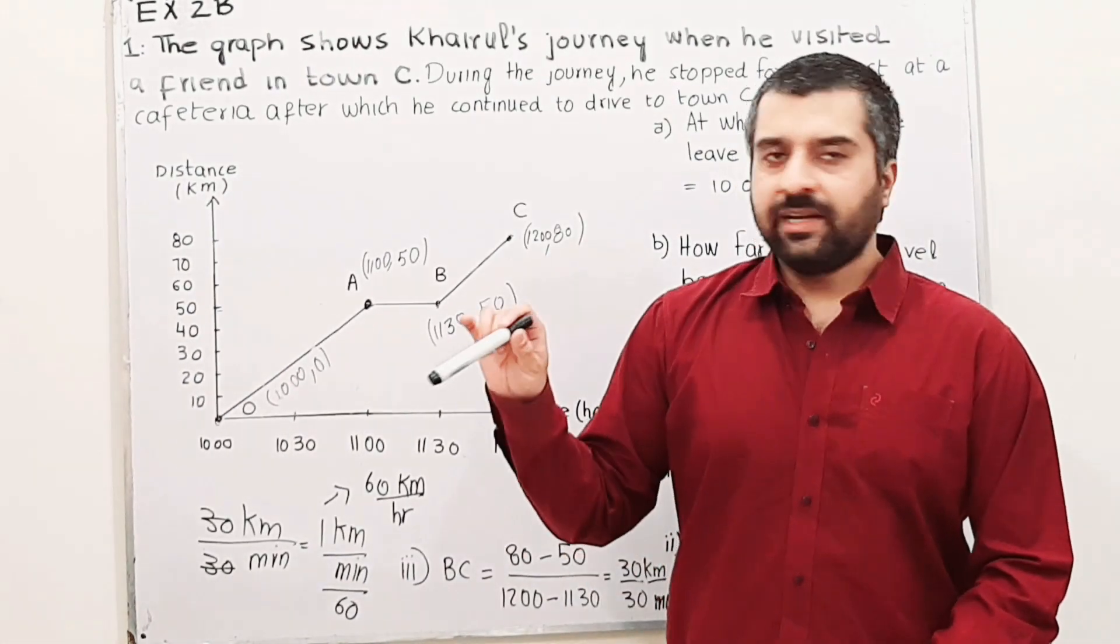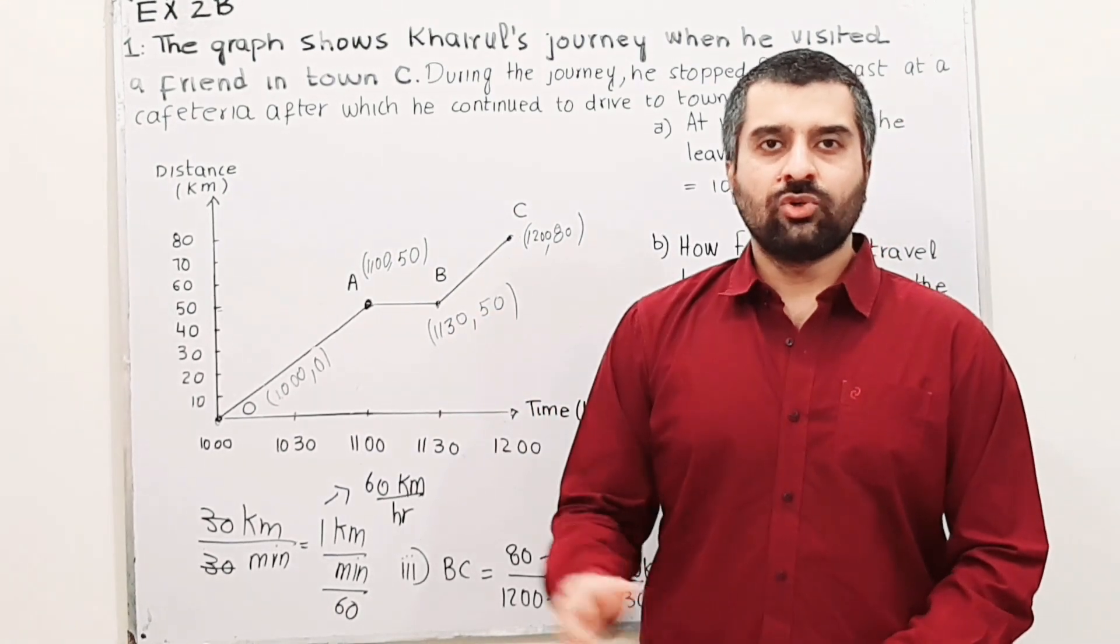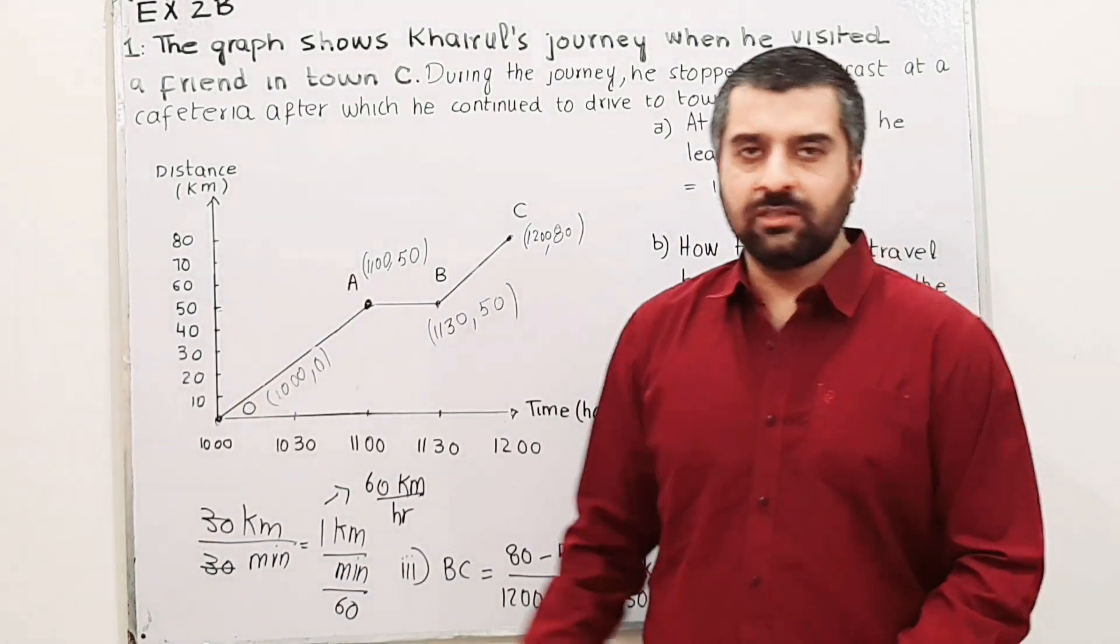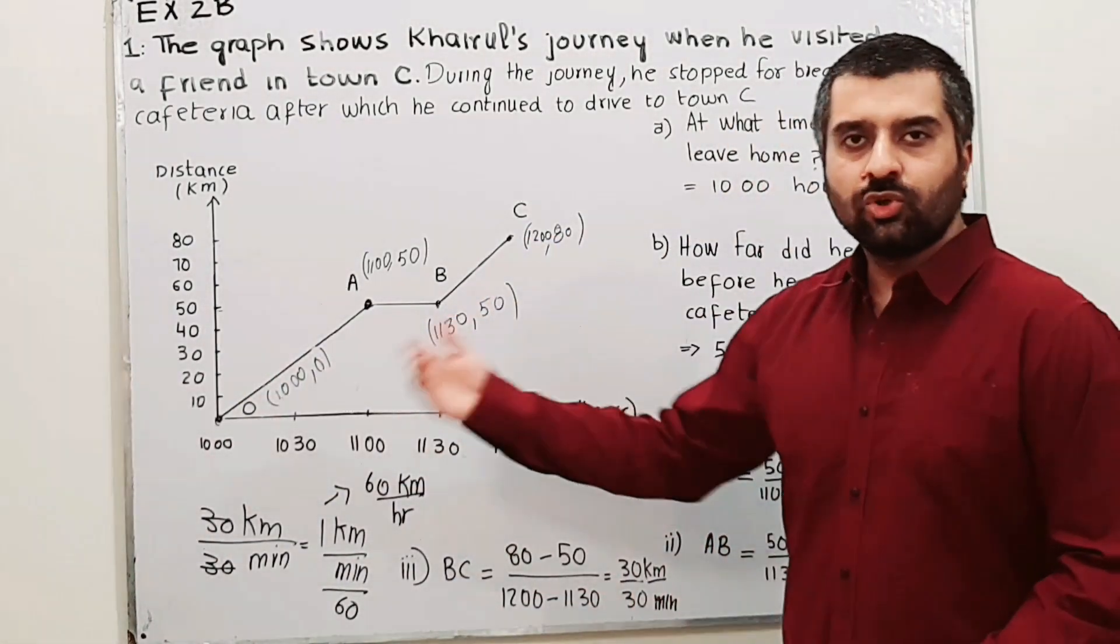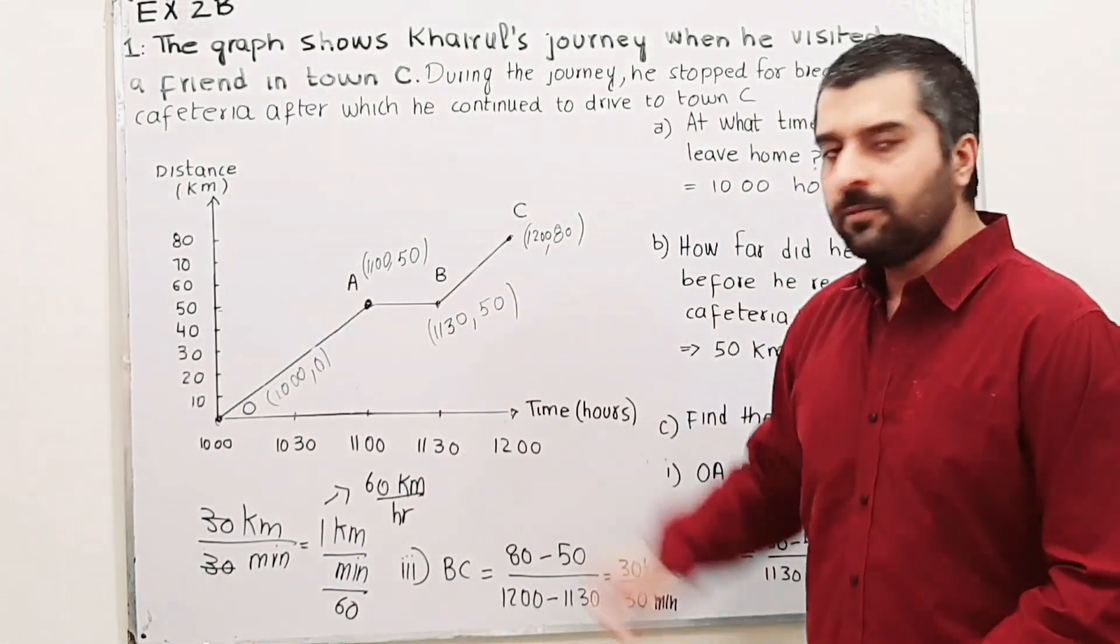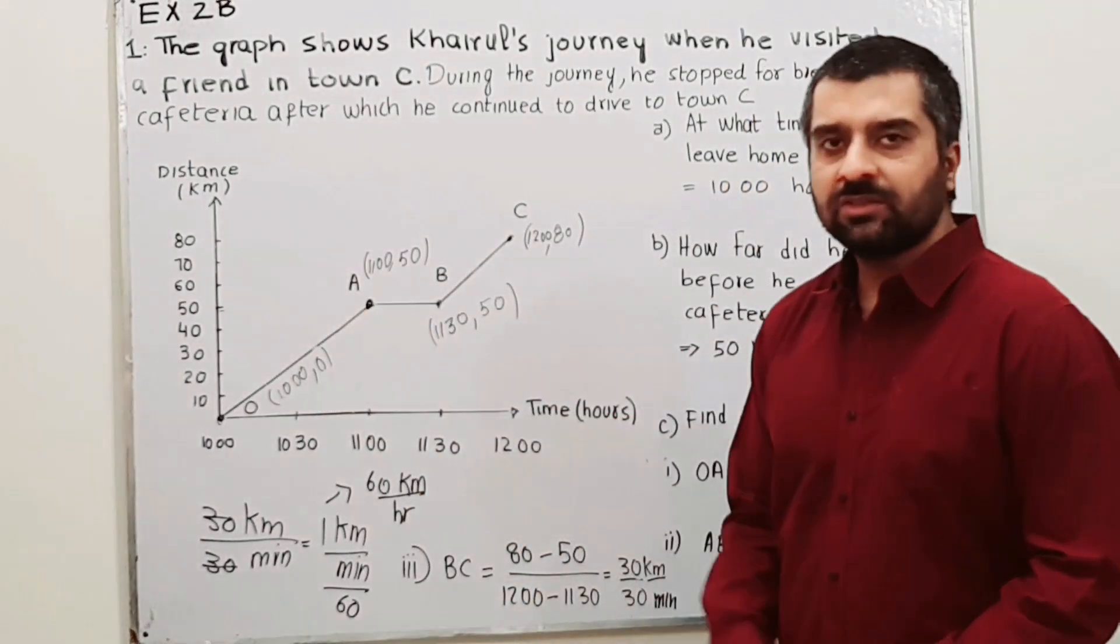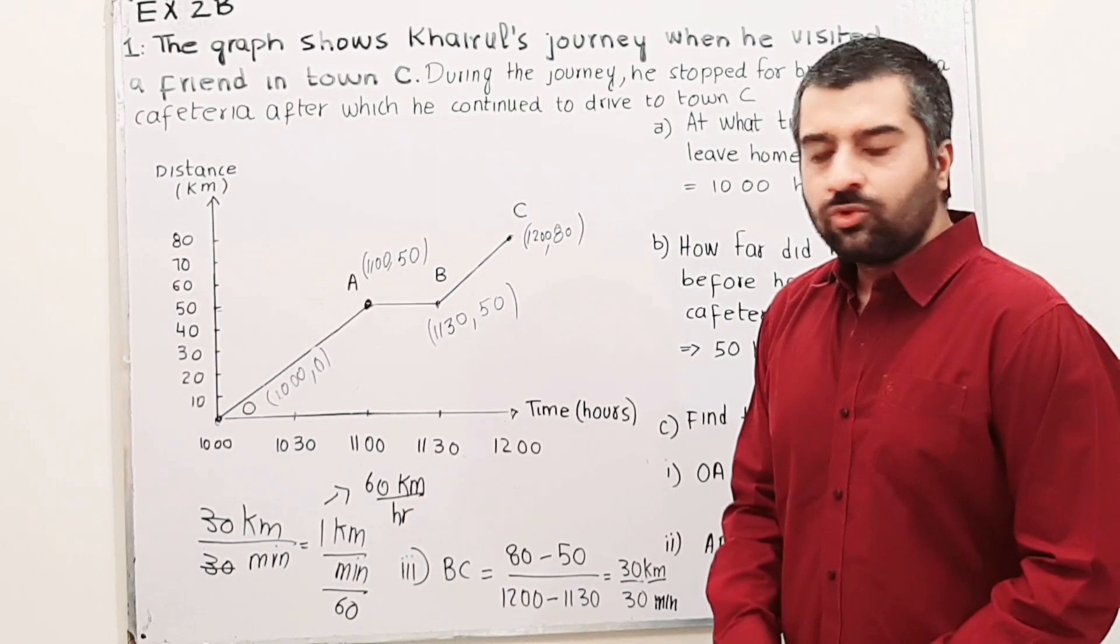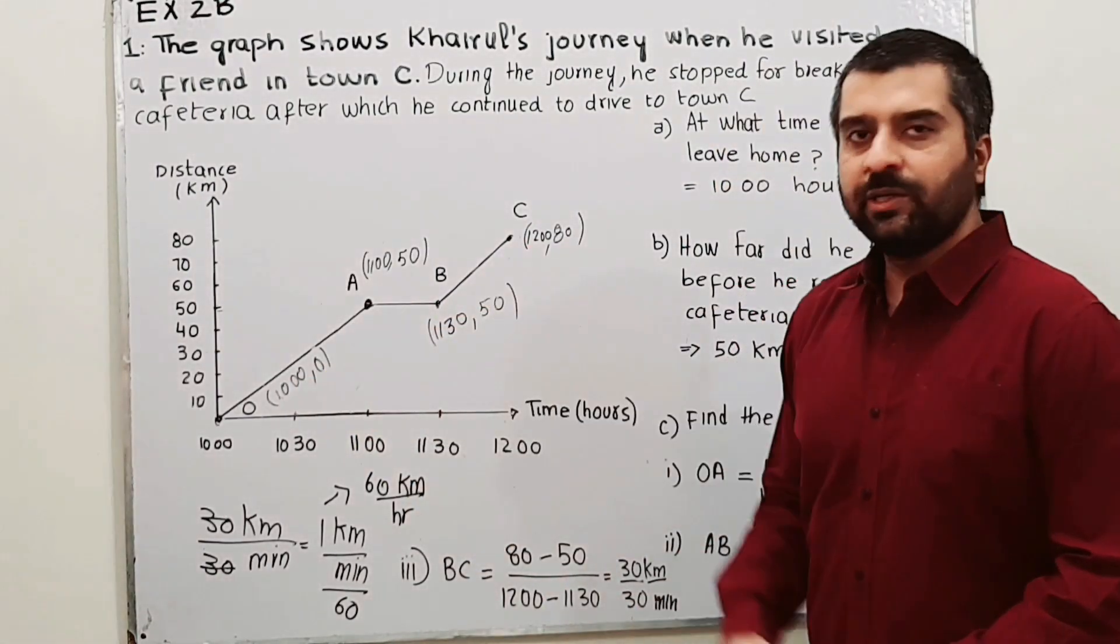Whereas inclined lines show steady speed. This straight line shows a steady speed. From O to A, we have a steady speed. From B to C, we have a steady speed. Though we have less speed over here, we have more speed over here.